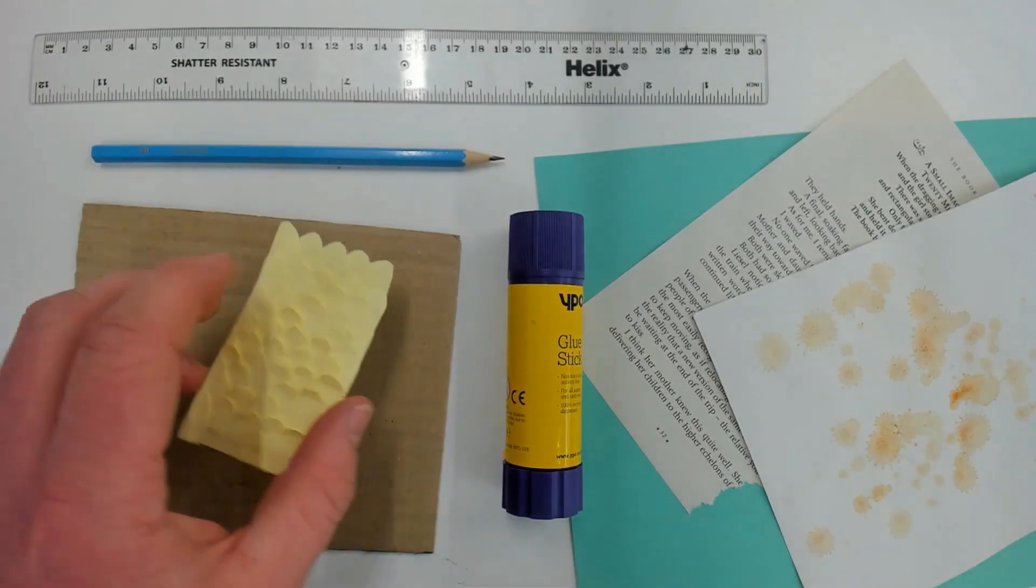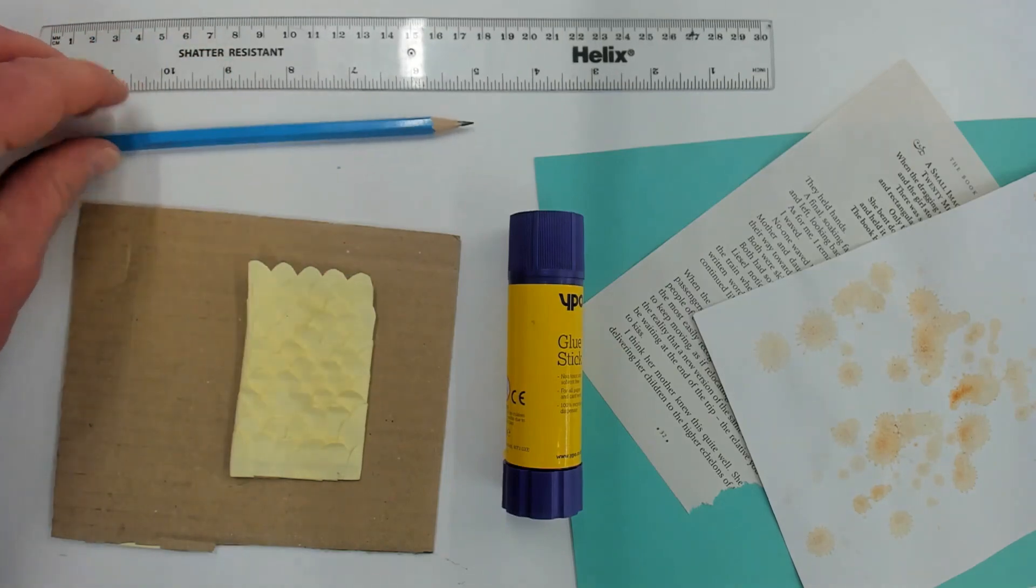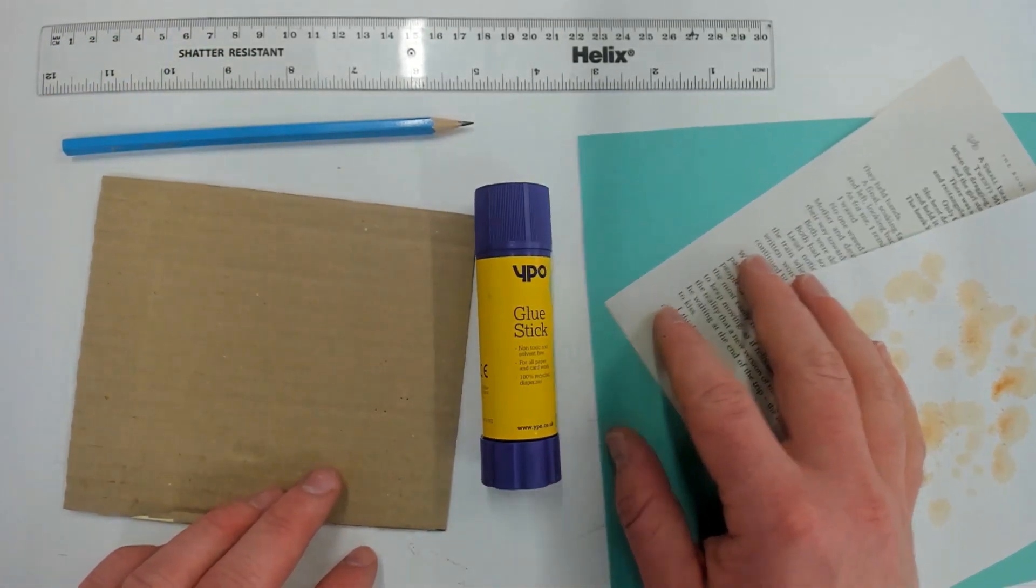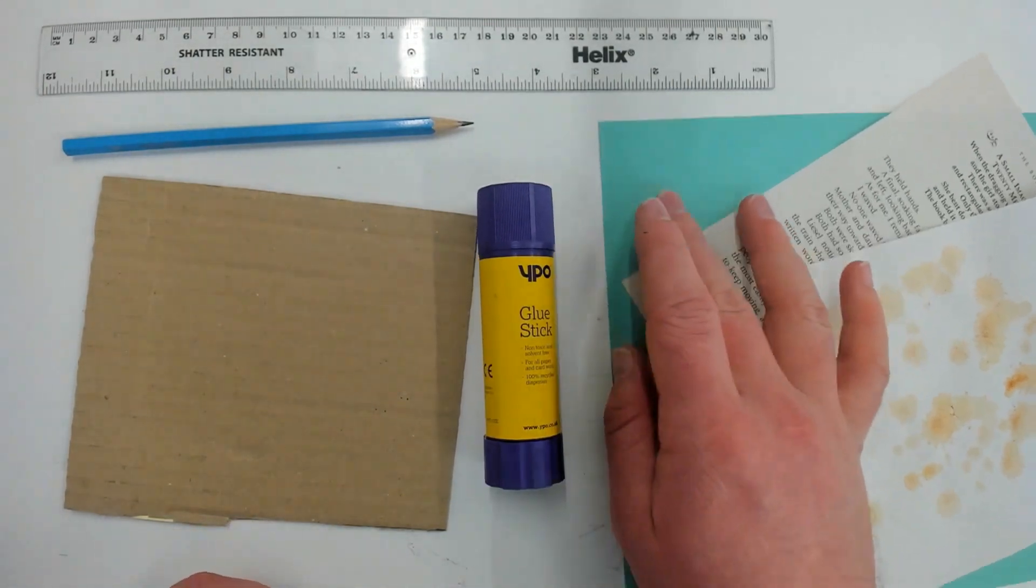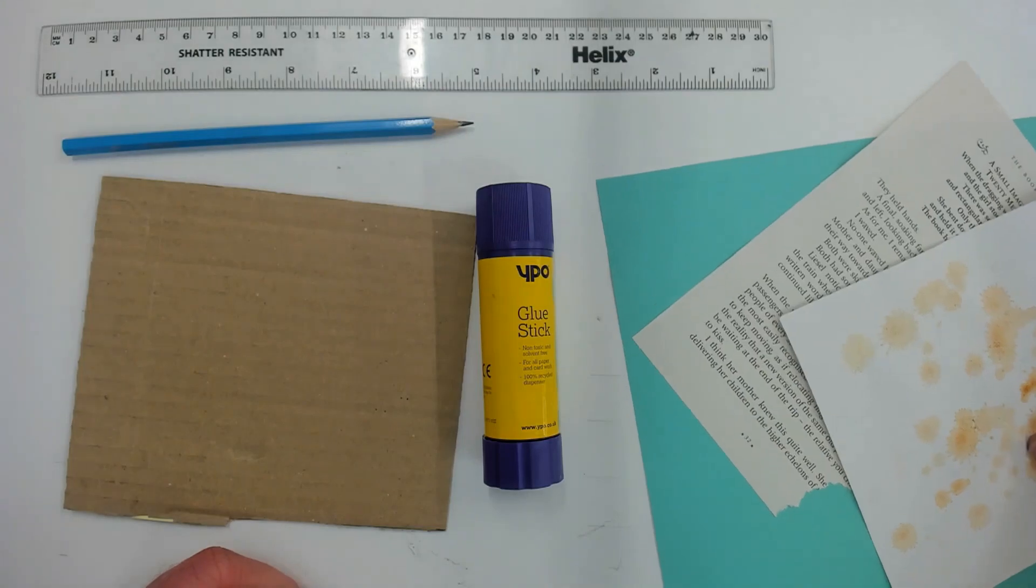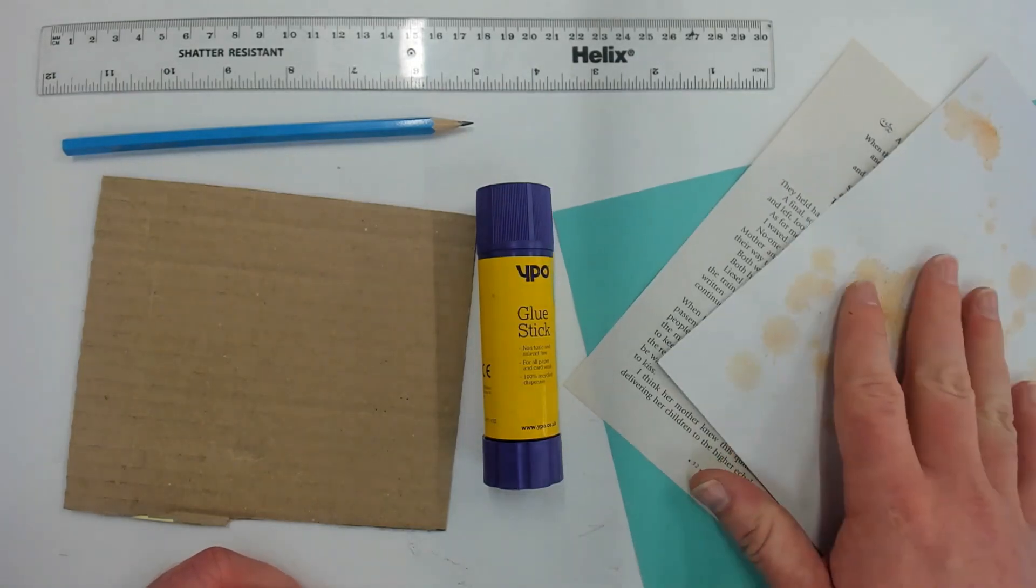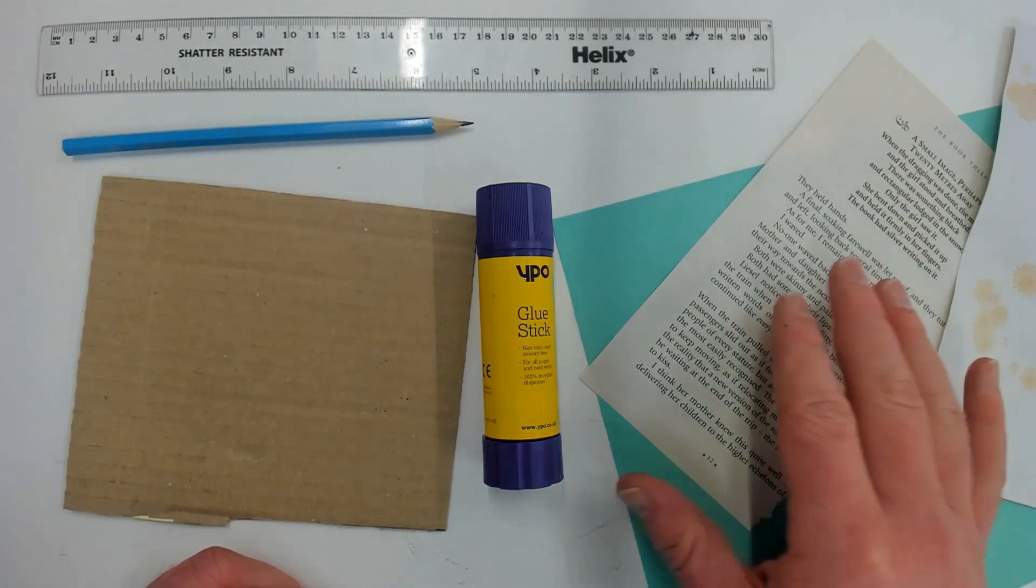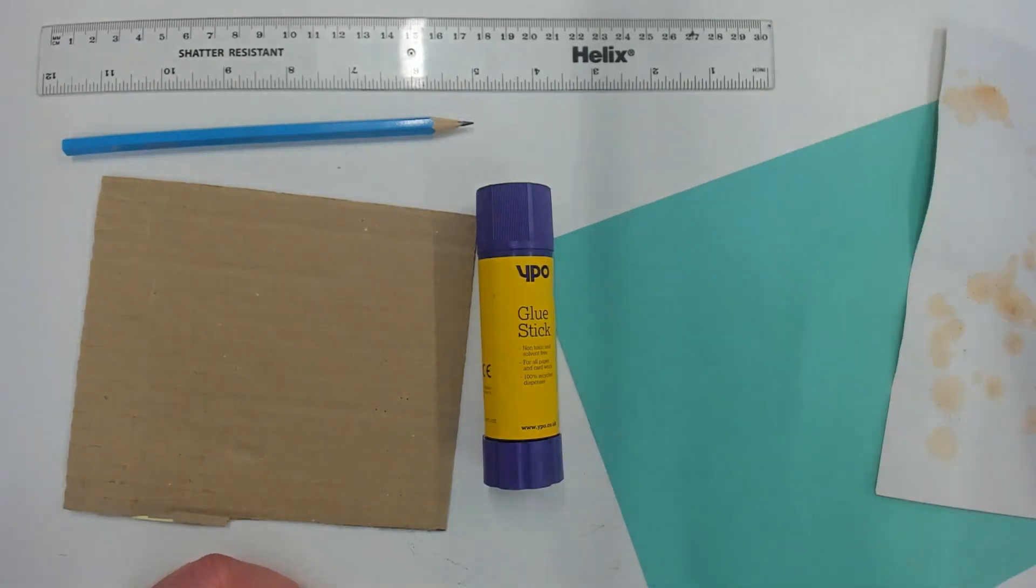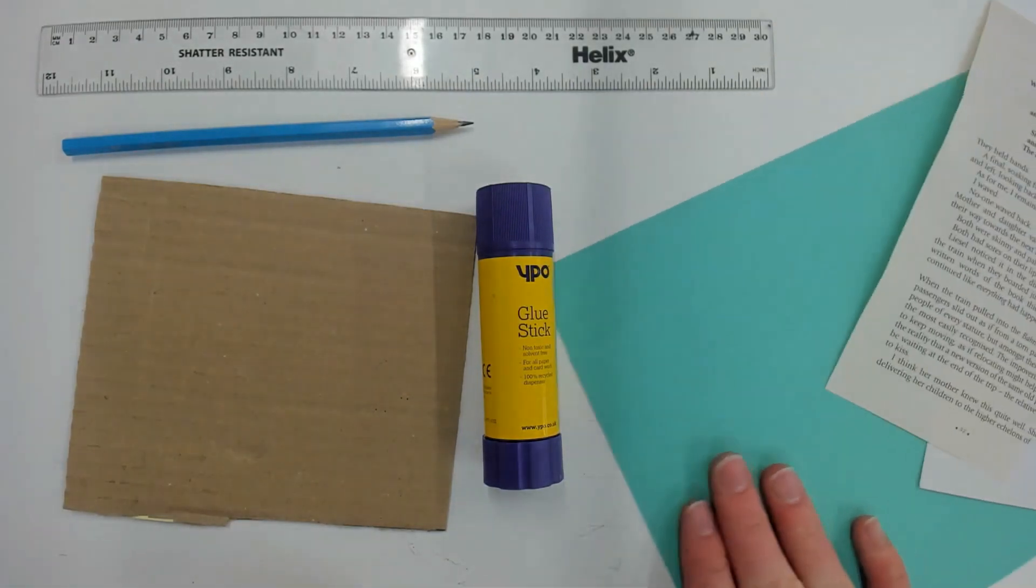First of all you're going to need a ruler, a pencil, a piece of cardboard, a glue stick and a piece of paper. You can use your piece of paper that you've got in your packs or you could use a plain piece of paper lying around at home. If you wanted to you could splash some coffee onto that piece of paper or you could use an old page of a book that you don't read anymore. It's completely up to you, but for this demonstration I'm going to use plain paper.